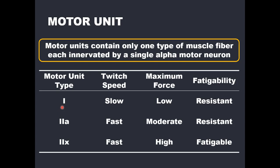Can you change your fiber type distribution by training a certain way? For example, if you are 50-50 type 1 to type 2, can you shift to 60% type 1 and 40% type 2 just by doing endurance training? The general understanding at this point is that yes, fiber type shifting can occur, but it has a very small impact on the overall fiber type distribution across the entire musculature.